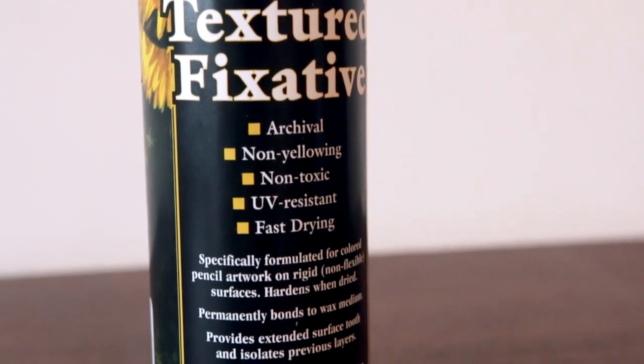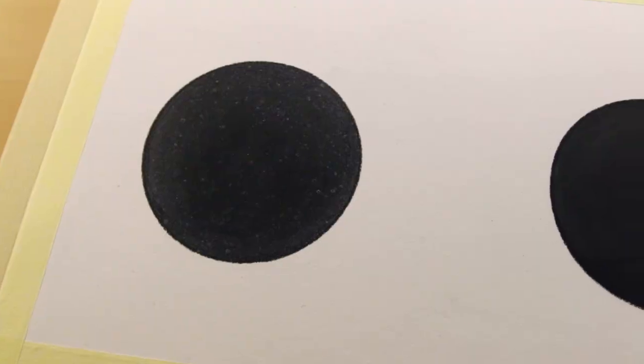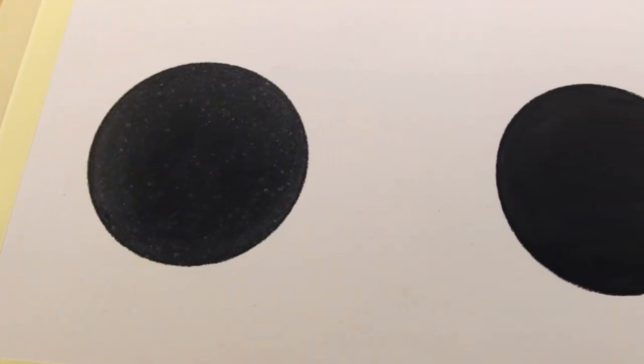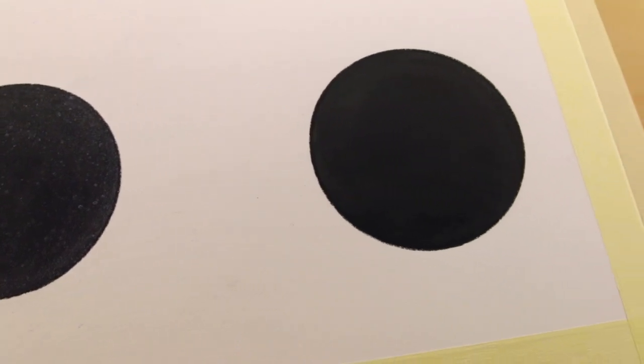Alright everyone, getting right into this demonstration, what you see here are two burnished black circles. If you're unfamiliar with what burnishing is, it's a colored pencil technique where you build up multiple layers of the pencil and you get a nice smooth waxy, clean surface.